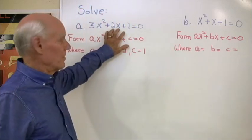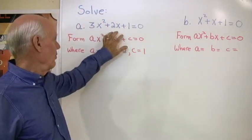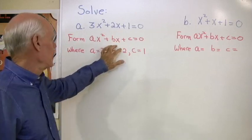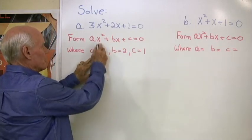Okay, here we have a quadratic equation in standard form. That means it looks like this. And so A, the coefficient of x squared, must be 3.